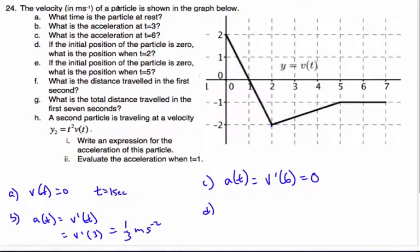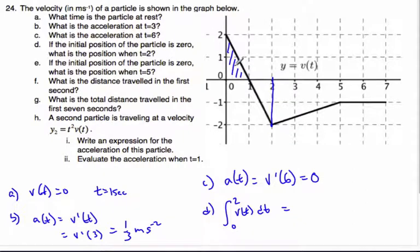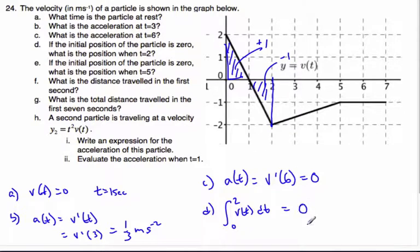If the initial position of the particle is zero, we wish to find the position when t equals two. I want to find the integral of velocity from zero to two dt. This is a positive triangular area with base one and height two, times one-half, giving area one. Then there's a negative triangular area of negative one. Starting at zero, I travel one forward then go back one, ending at the same position — zero.